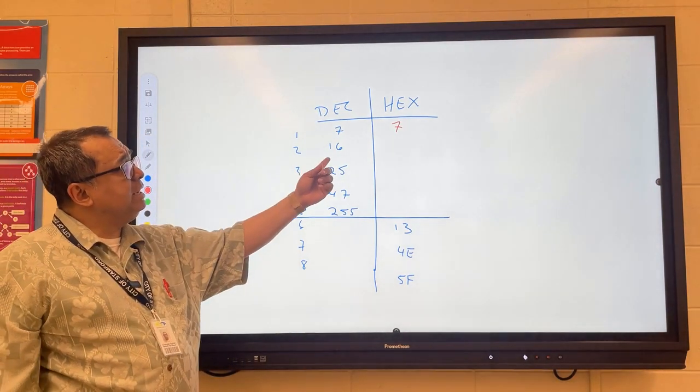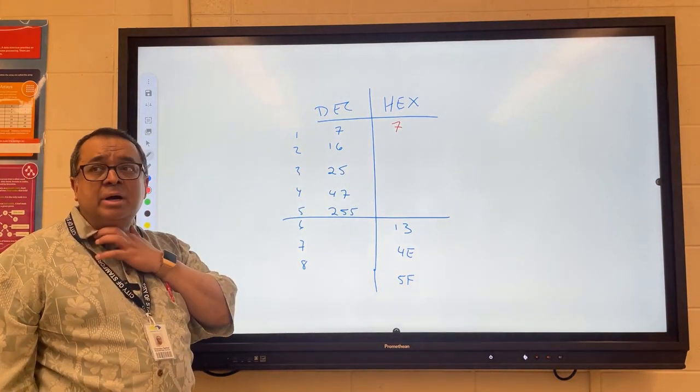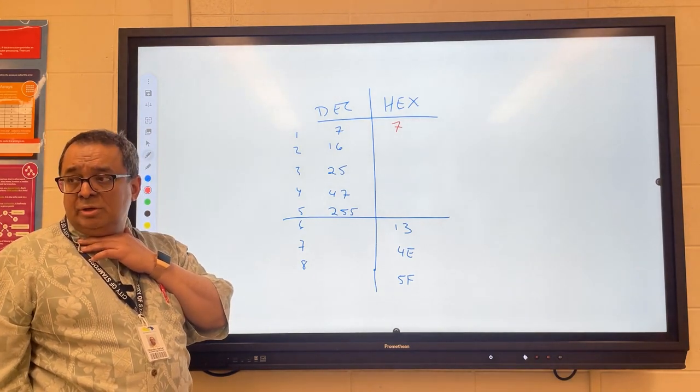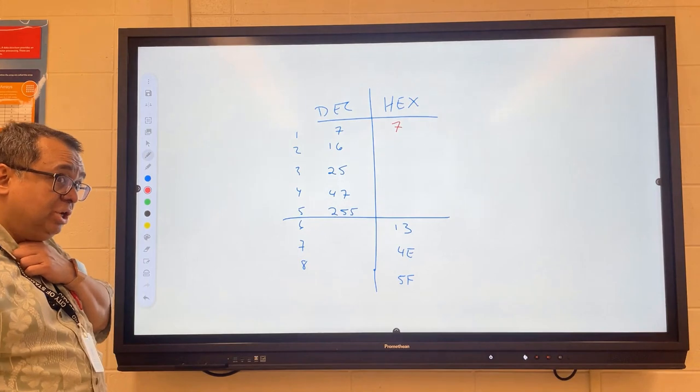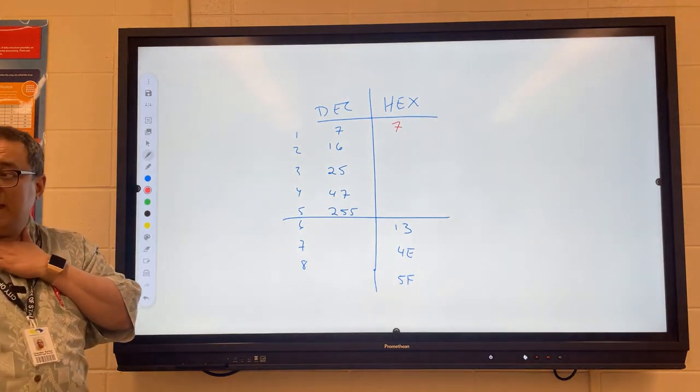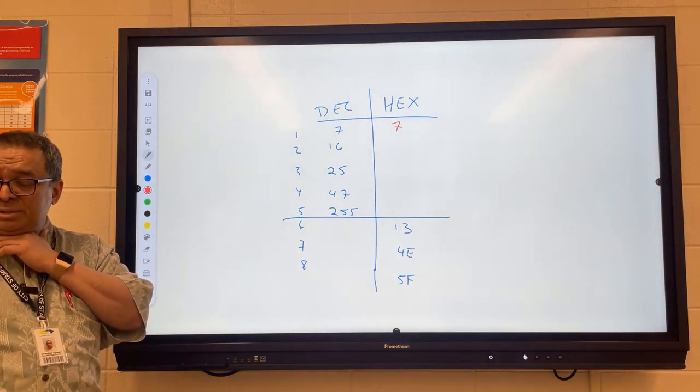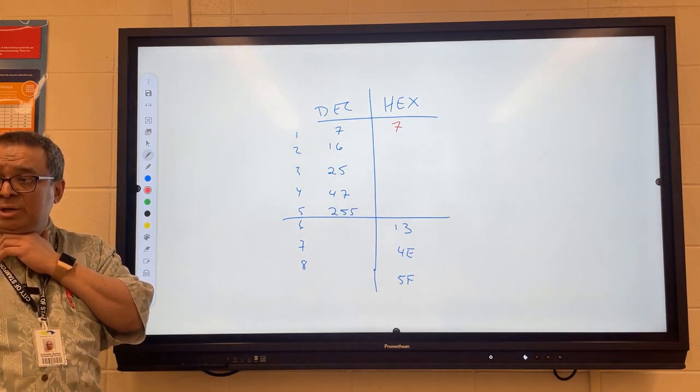Now 16 in hexadecimal is how much? Yes, sir. Huh? G? So there is no G. That would be like if we had a base 17 or something, but this is base 16, so F is how high we go.